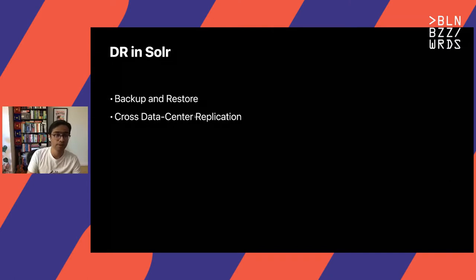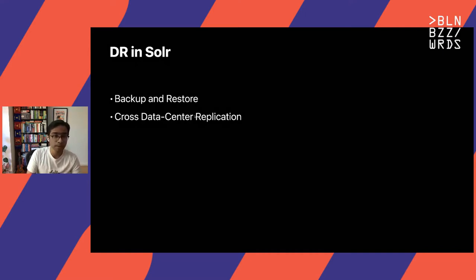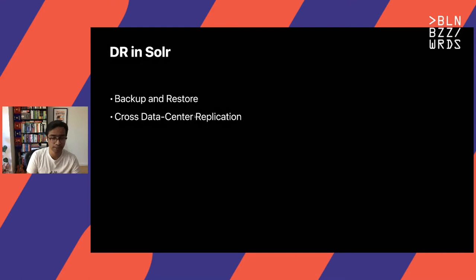Solr has provided DR readiness options for a while, and I'm going to refer to disaster recovery as DR for the rest of the talk. While backup and restore is certainly the most important DR option available, CDCR, or cross data center replication, actively copies data, allowing it to also work as an HA solution. But I'd like to highlight that DR shouldn't be confused with HA, and we'll get to that in a bit.